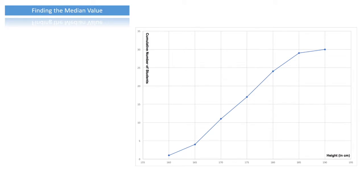The first thing we'll do is learn how to find the median value. We have a cumulative frequency diagram following up on what we've previously seen: a class of 30 students all of whom were asked to measure their own heights and summarize the information in this diagram. When working with such diagrams, the first thing we should always do is make a note of the total number of values or outcomes, which we call n. In this case there were 30 students, so n equals 30.